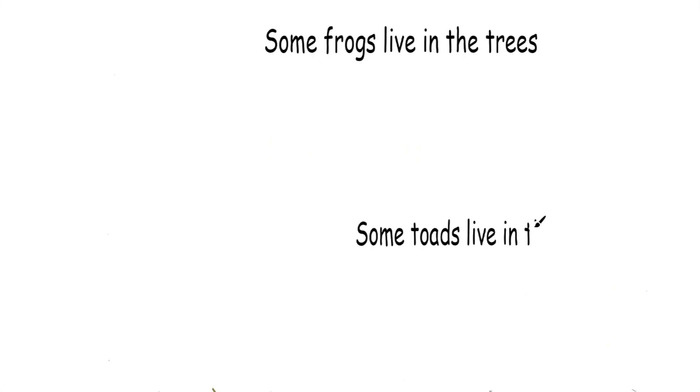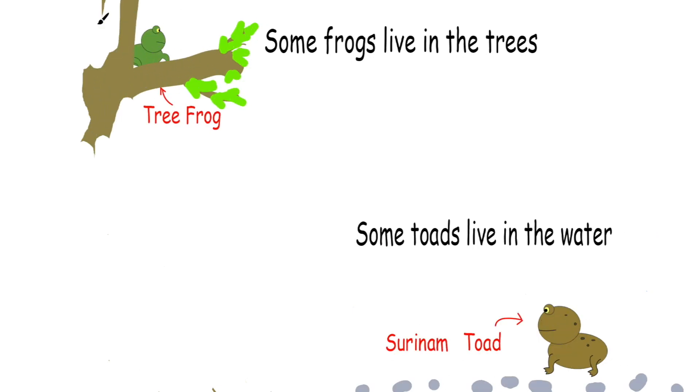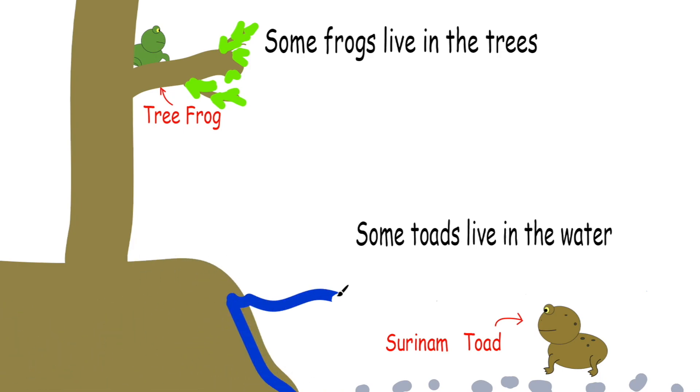For example, there are tree frogs that spend their whole life in trees and do not live in the water, while some toads, such as the Suriname toad, spend their whole life in rivers or streams.